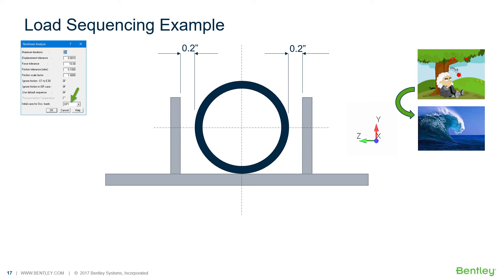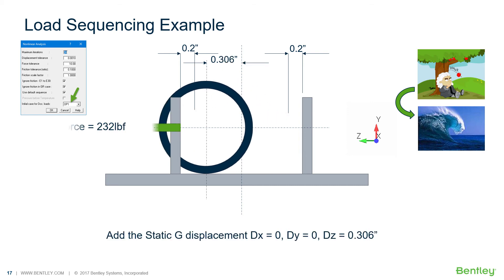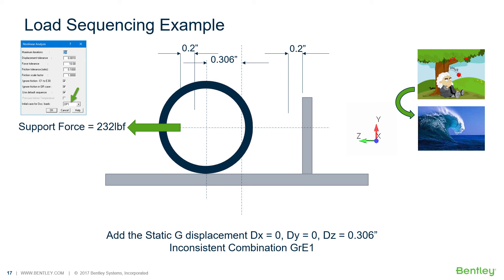Let's start again, but this time assume the occasional load occurs before temperature, right after gravity. The pipe moves 0.306 inches right through the support guide with a force of 232 pounds showing. How can this be possible unless the support breaks? But this is what happens if the inconsistent combination GRT1+E1 is created in AutoPipe, because the program settings are technically still set to tell the program that the occasional load is occurring after the temperature load. This shows what happens when the algebraic summation approach is used — it can yield inaccurate results.